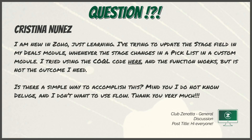Over in Club Zanata, Christina Nunez writes: I am new in Zoho, just learning. I'm trying to update the stage field in my Deals module whenever the stage changes in a pick list in a custom module. I tried using the code from a post that yours truly made in Club Z for updating related records, and the function works but is not the outcome that I need. Is there a simple way to accomplish this?